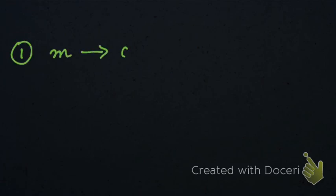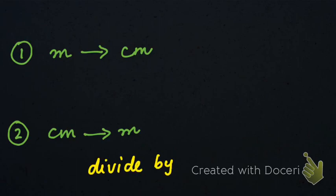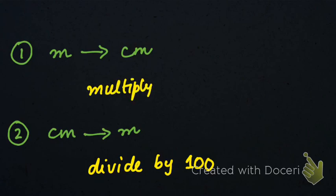To sum this up: the first conversion we did was meters to centimeters, and the second was centimeters to meters. In conversion of centimeters to meters we divide by 100, and in conversion of meters to centimeters we multiply by 100. I hope that has been clear. Jazakallah.